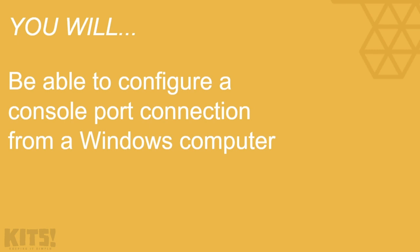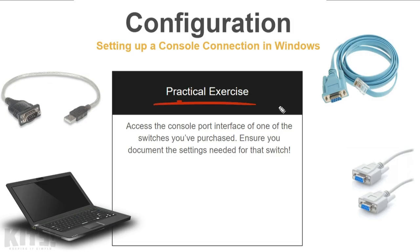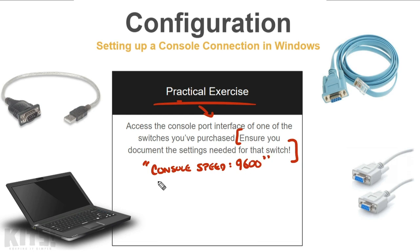I promised at the beginning of this nugget that you'd be able to configure a console port connection from a Windows computer, so now I want you to do it. The practical exercise is to access the console port interface of one of the switches you've purchased — really, do them all. Get the command line interface up to where you have administrative access. As a bonus, document the settings you need for the switch. Once I figure out the console port settings, I'll put a white sticker on the back of the switch with the console speed and baud rate, and jot down the default username and password — in this case, it was Cisco/Cisco.